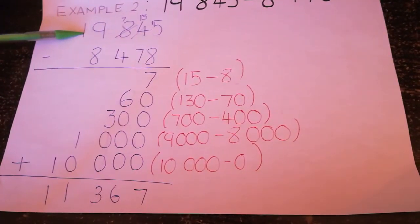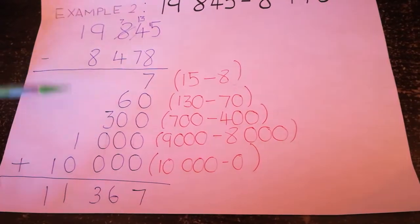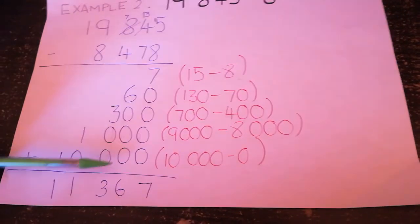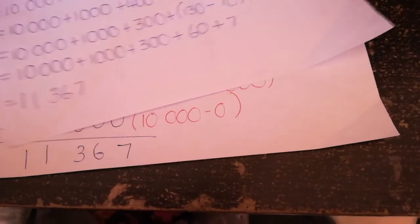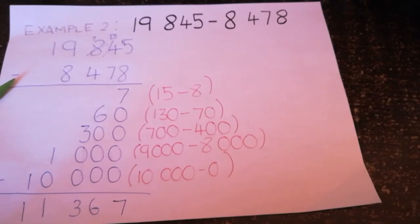And then our 10,000 is left alone. There is no 10,000 here. So we just add up these numbers, and we get the same answer as before. See? So you can use either method. I prefer the second method.